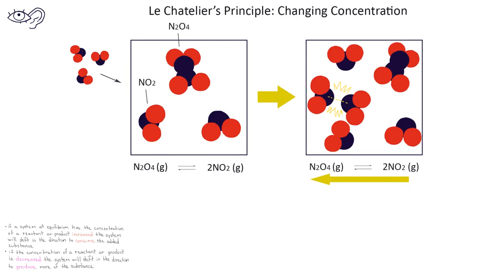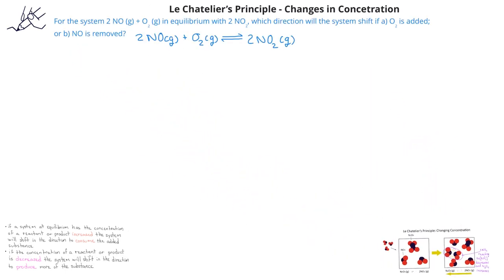Once the NO2 is added, the system is no longer at equilibrium. What's going to happen since the system is no longer at equilibrium? As the second square shows, the system will move in the direction that will consume some of the added NO2. This way, the reaction will shift from more NO2 on the product side to produce more of the N2O4 on the reactant side.